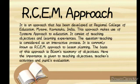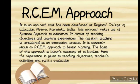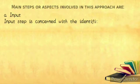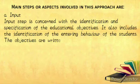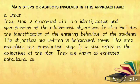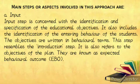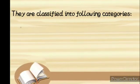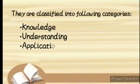The basis of this approach is Bloom's taxonomy of objectives. Importance is given to teaching objectives, teachers' activities, and pupils' evaluation. The main steps involved in this approach begin with the first step: Input. The input step is concerned with the identification and specification of educational objectives. It also includes identifying the entering behavior of students, and objectives are written in behavioral terms — known as Expected Behavioral Outcomes (EBO). These are classified into four categories: knowledge, understanding, application, and creativity.